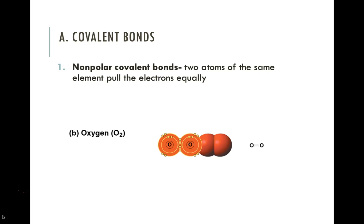Carbon likes to form nonpolar bonds with itself, so you can get these huge chains of carbon molecules. That gives a molecule a largely nonpolar region and nonpolar characteristics. You can have not only nonpolar bonds, but nonpolar regions and nonpolar characteristics as well — and that'll become important when we start talking about water and various interactions.